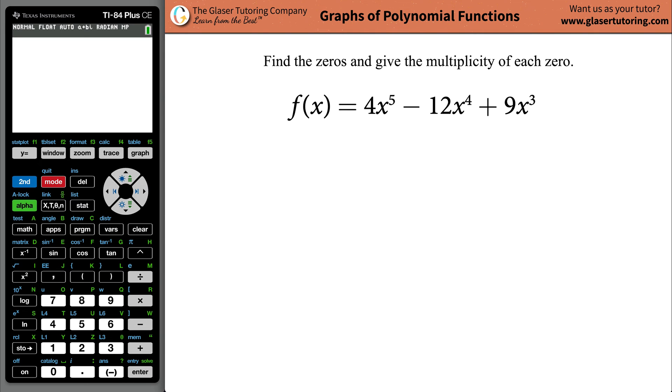Hi-dee-ho, it's Andrew again, and today I would like to teach you how to find the zeros and give the multiplicity of each zero of the following function: 4x raised to the 5th minus 12x raised to the 4th plus 9x cubed.